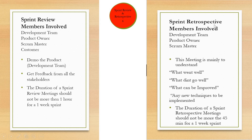Then there is the sprint retrospective. Members involved are the development team, the product owner, and the scrum master. This meeting is mainly to understand from the team members: what went well, what didn't go well in the sprint, what can be improved, and whether there are any techniques to be implemented. The duration of the sprint retrospective should not be more than 45 minutes for a one-week sprint.